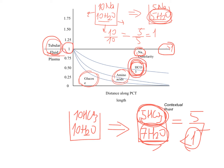Even though we are reabsorbing both bicarb and sodium, the key concept of this graph — relative concentrations along the proximal convoluted tubule — is understanding this ratio formula. The position on the graph reflects how the rate of reabsorption of a substance compares to the rate of water reabsorption.